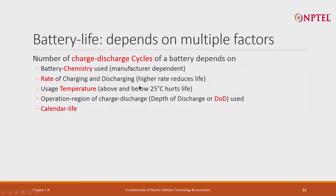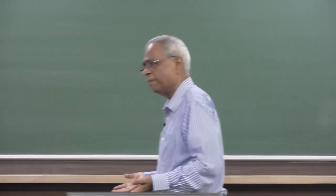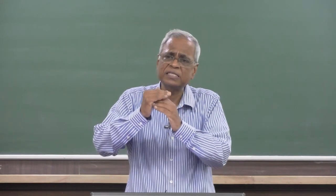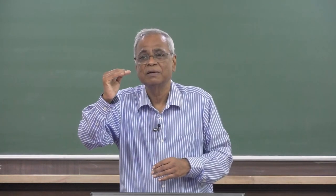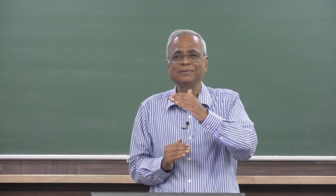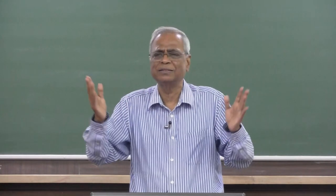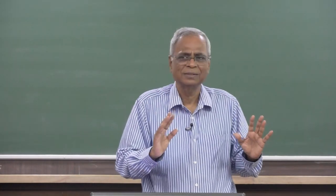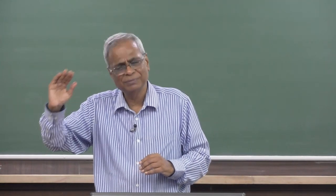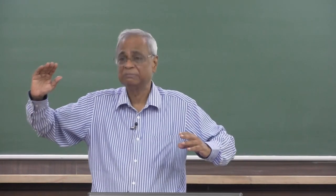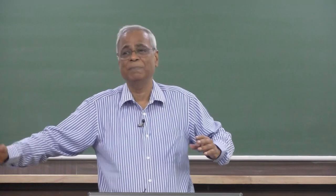Temperature also matters — it depends on the temperature. The ideal is 25 degrees centigrade. Lithium-ion batteries behave best at 25°C. Above 25°C, number of cycles reduces; below 25°C, number of cycles also reduces. Best life is at 25°C — broadly between 20 and 30 you get good cycles. Above 30 it starts going down; above 35 to 40 it gets bad; 45 is really bad. Of course there are different battery chemistries which have a wider temperature range.